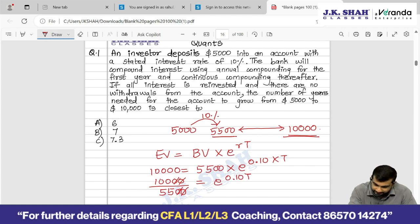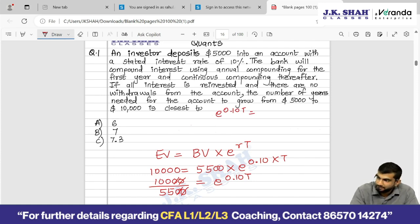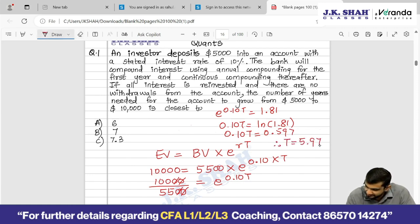Let me rearrange a little. E to the power 0.10T equals how much is the value of 100 divided by 55? 1.81. So now using the rule of log, 0.10T equals log of 1.81. Log of 1.81 is how much? 0.597. So 0.1T equals 0.597. Therefore T equals 5.97 which is roughly 6 years.